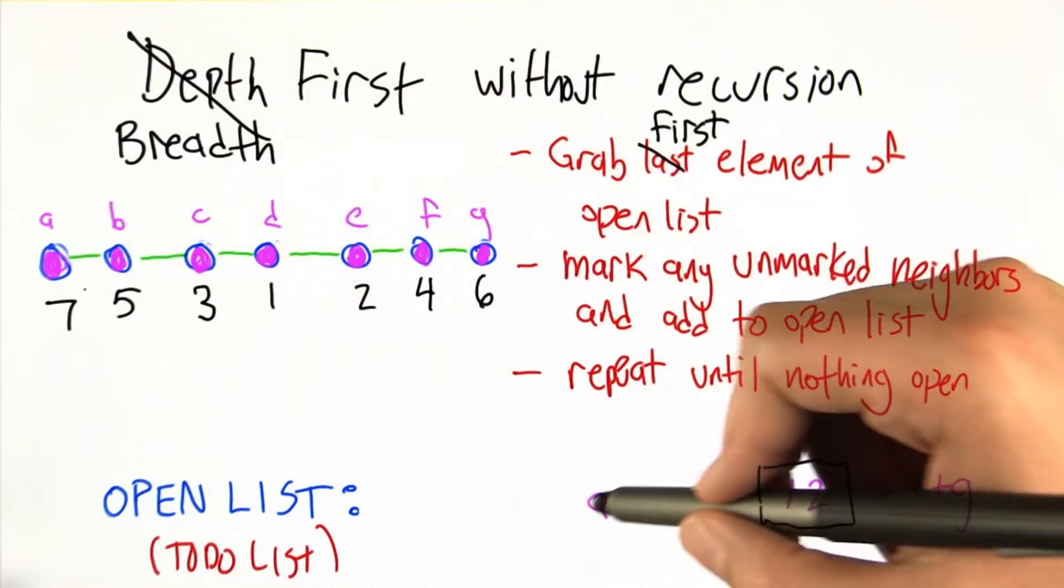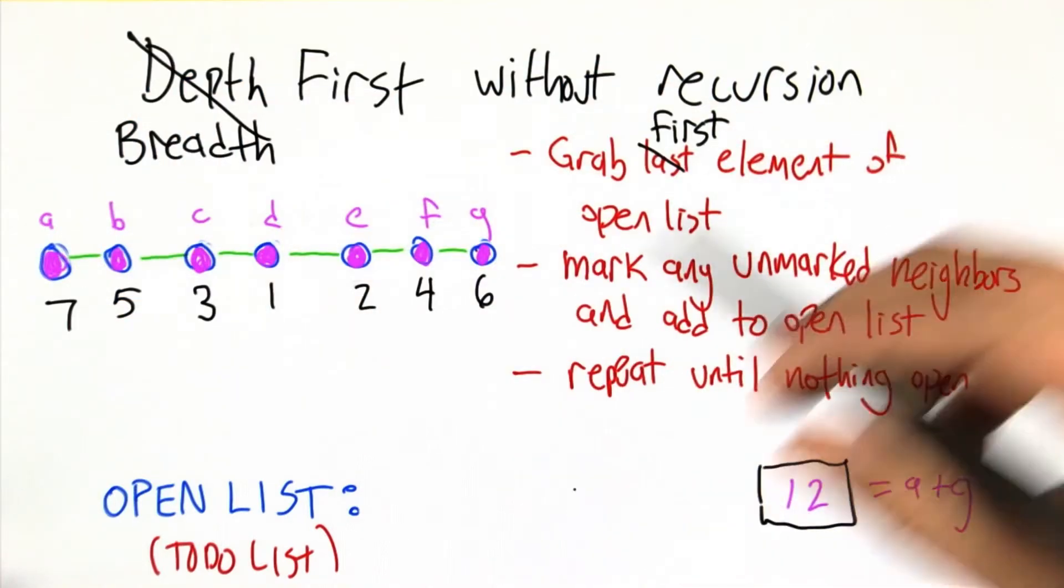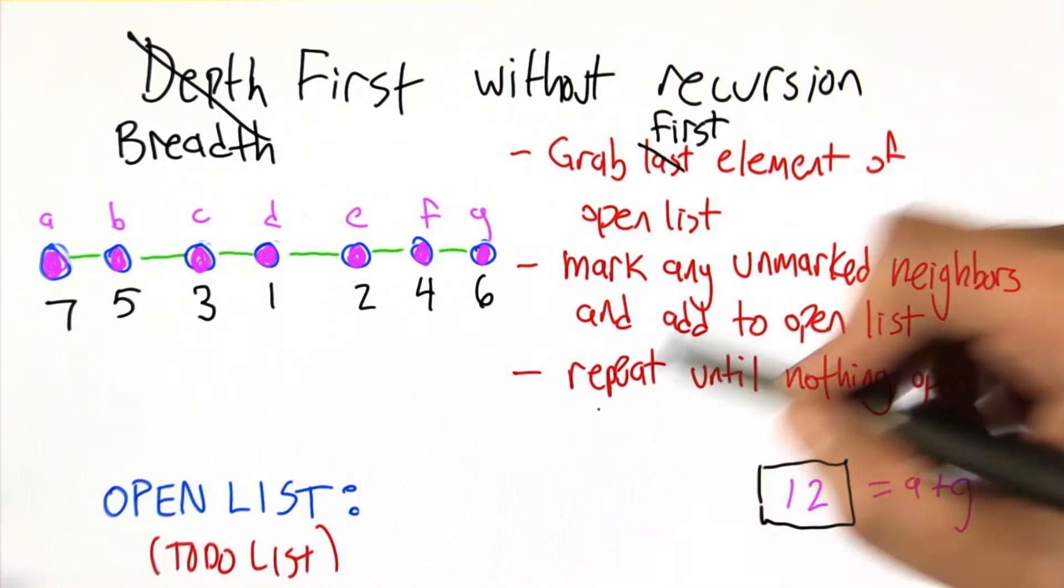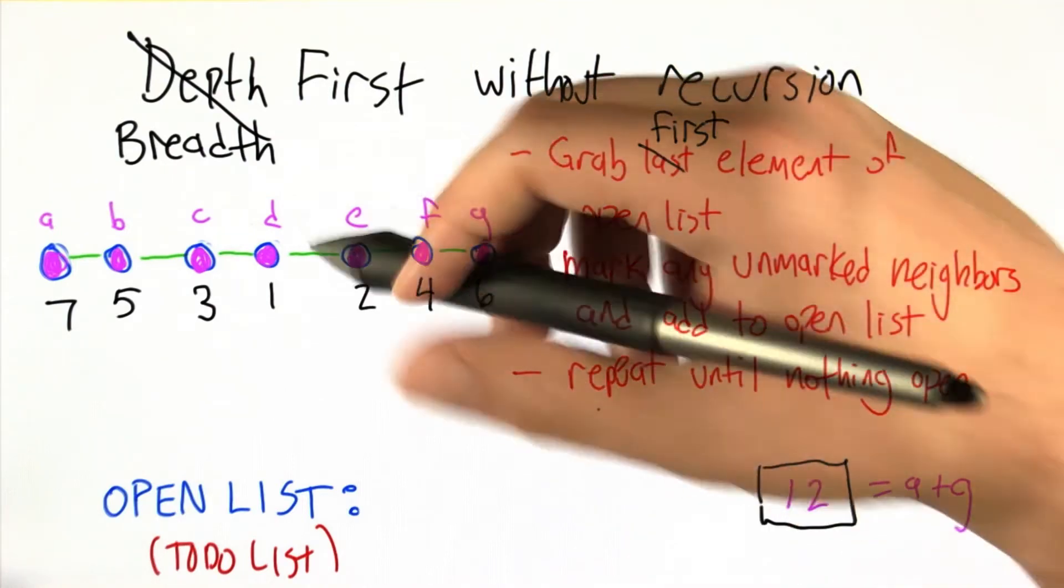The next thing we pull off is G. We notice it has no open neighbors. Then we pull off A. We notice that it has no open neighbors. And the open list is empty. The search is finished.